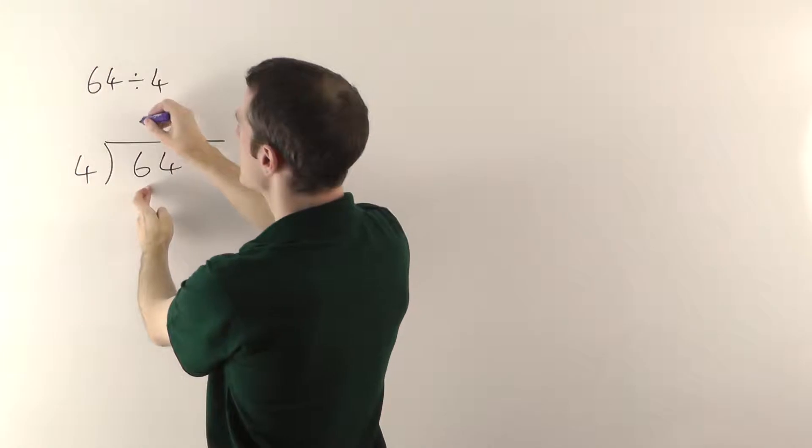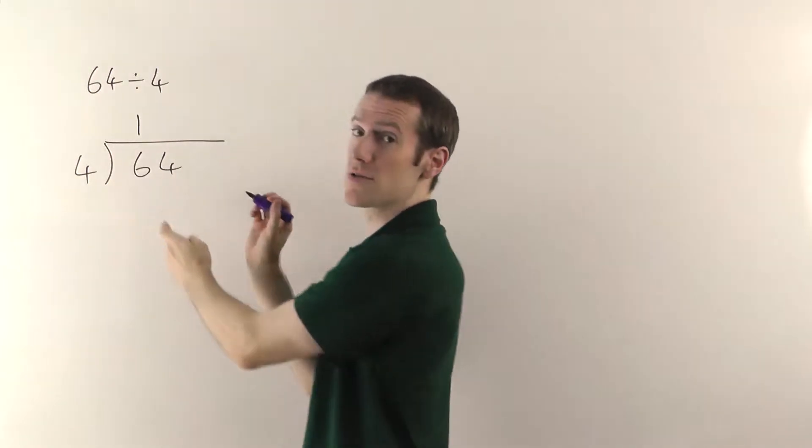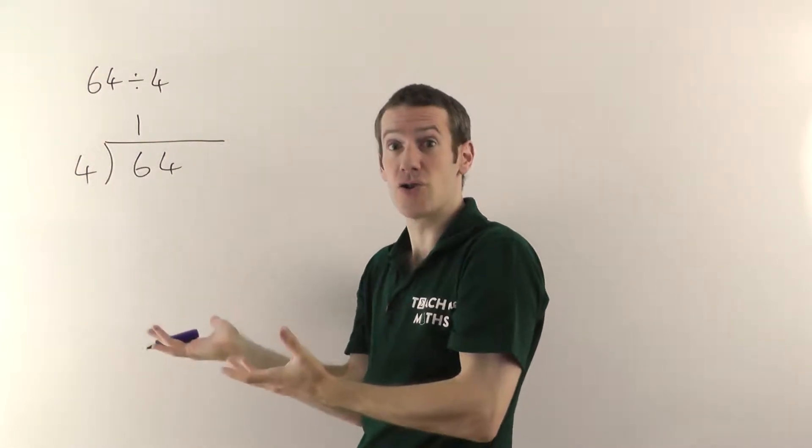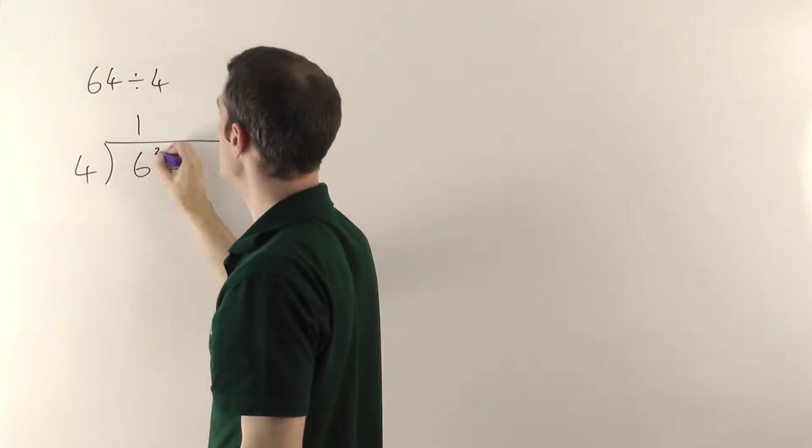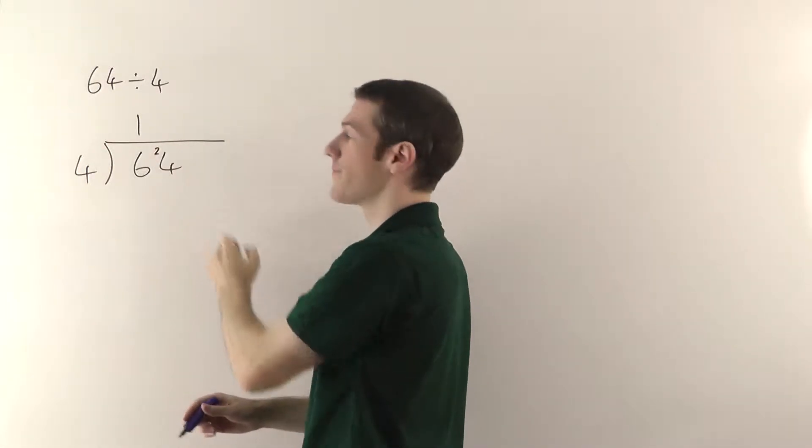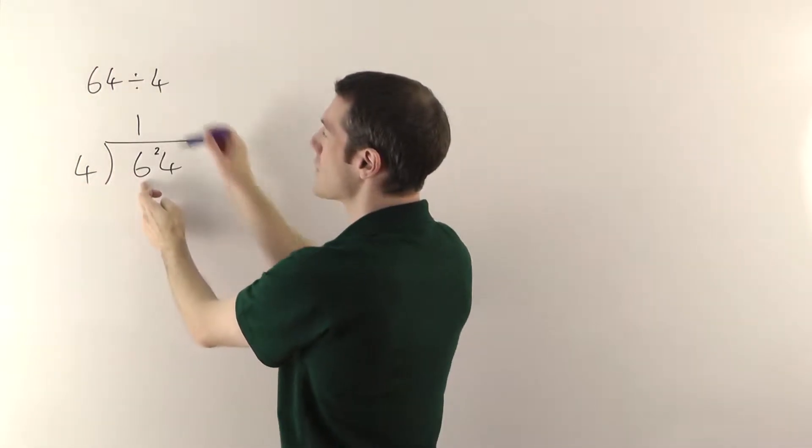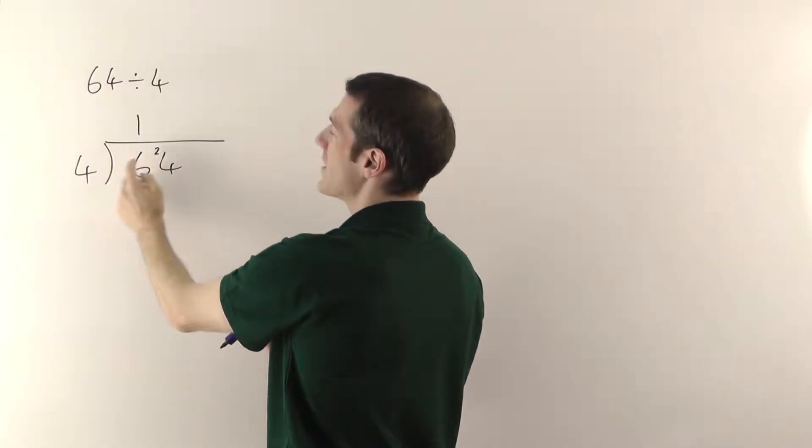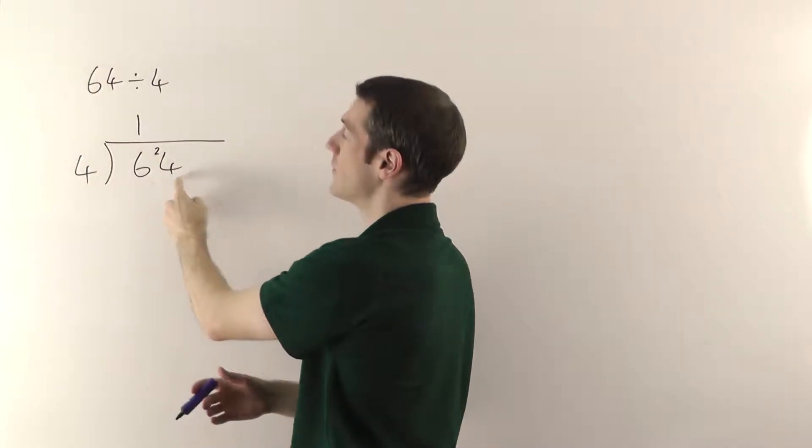So 4 will go into 6 once with 2 left over. We say there's 2 remainder. So 4 in 6 goes once. How many times it fits in always goes at the top, and the remainder, the 2 in this case, goes on to the next column. So that's going to turn the 4 into a 24.